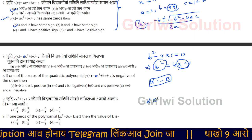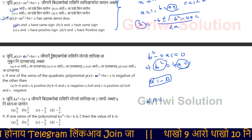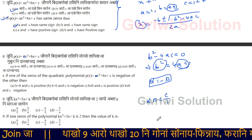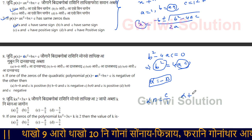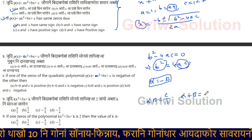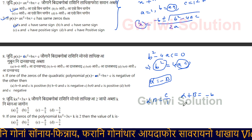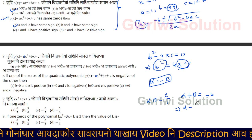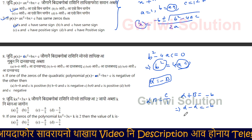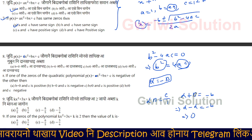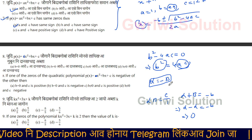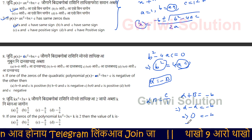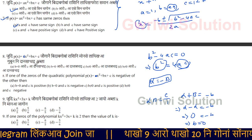If alpha plus beta equals 0, then alpha into beta equals c by a. So you have c by a, which is minus c by a. Alpha plus beta equals minus b by a. From this, beta equals minus b by a. Beta 1 minus b equals 0, so b equals 0.